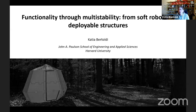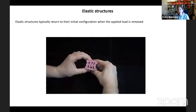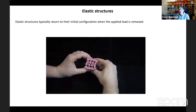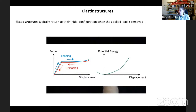The structures we've been looking at are elastic structures. Typically, when we deform elastic structures, as soon as we remove the load, they go back to the initial configuration. The force-displacement curve of such a structure might be non-linear — in this case there is an instability and a plateau in the force-displacement curve — but the energy landscape is characterized by a single minimum. So as soon as you remove the load, you go back to the minimum.